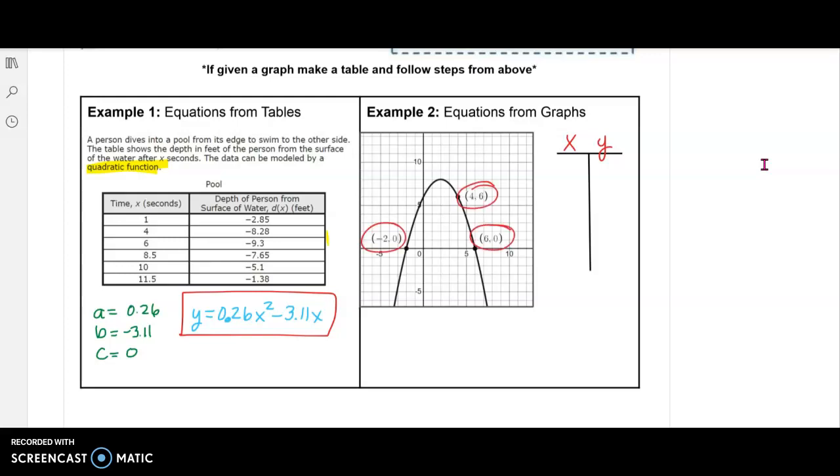But you can find those points and put them in the table yourself. So my first point is negative 2, 0, 4, 6, and 6, 0. Notice two of them are our roots, the X intercepts right here. And then one of them is a random point.